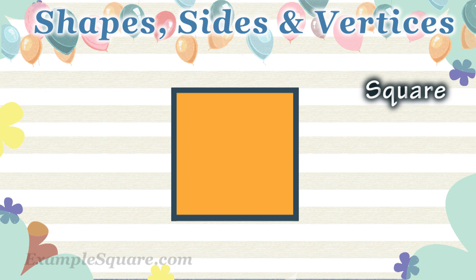How many vertices does a square have? A square has four vertices.